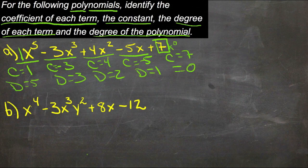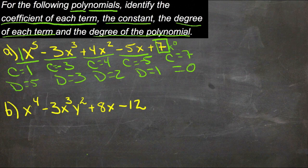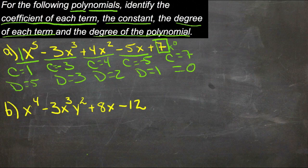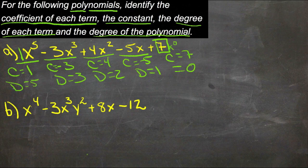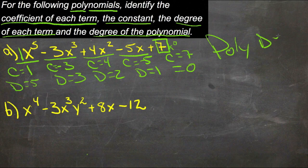This sort of descending powers is pretty common. In fact, that's how you write something in standard form — you write it in descending powers of x. And then the degree of our polynomial is the highest degree in the polynomial. In this case, 5. So our polynomial degree is 5.